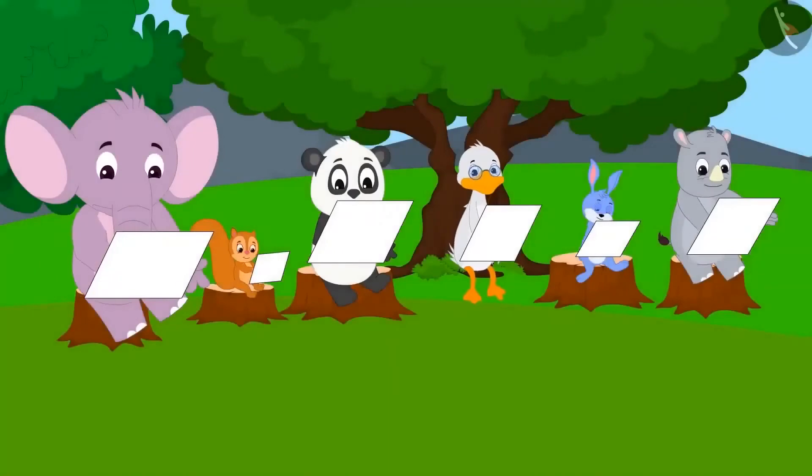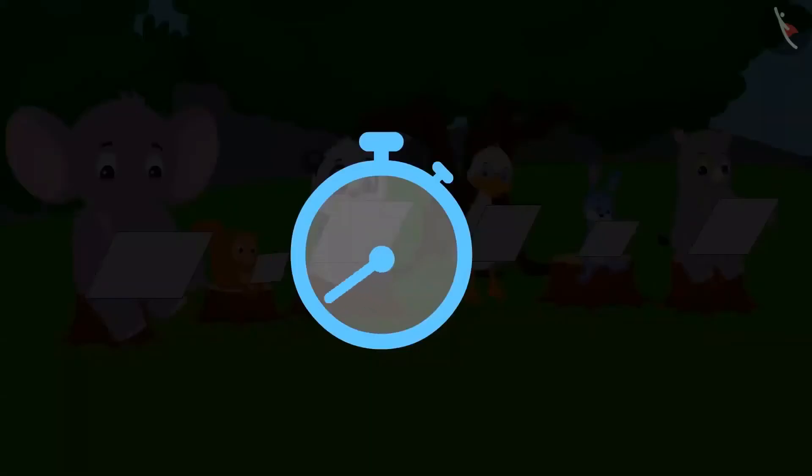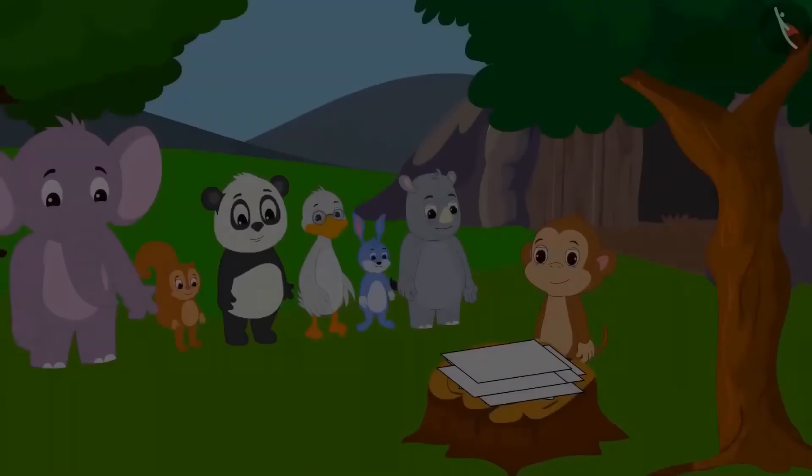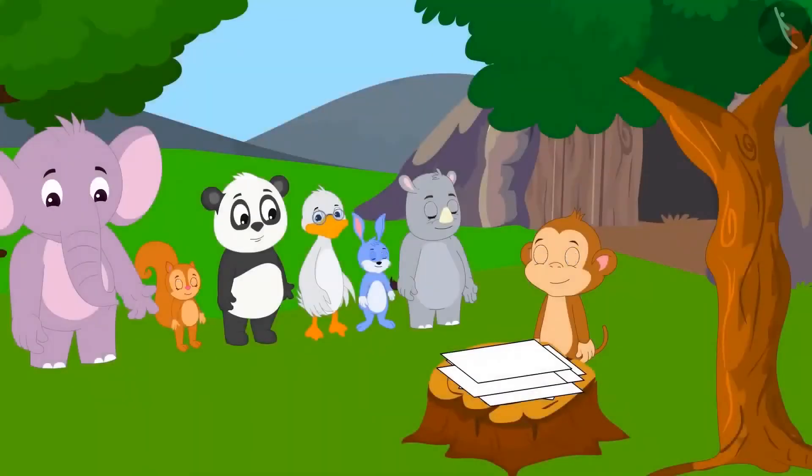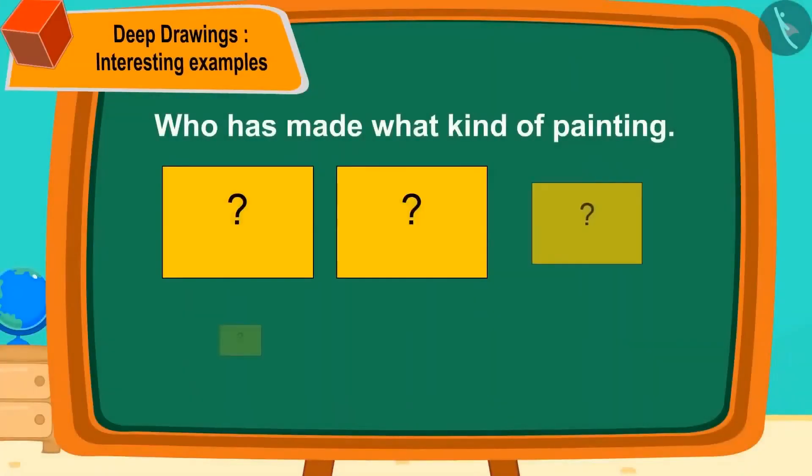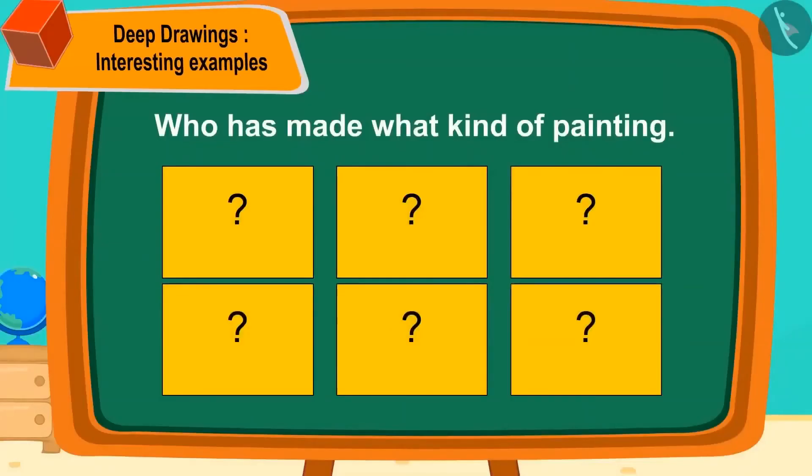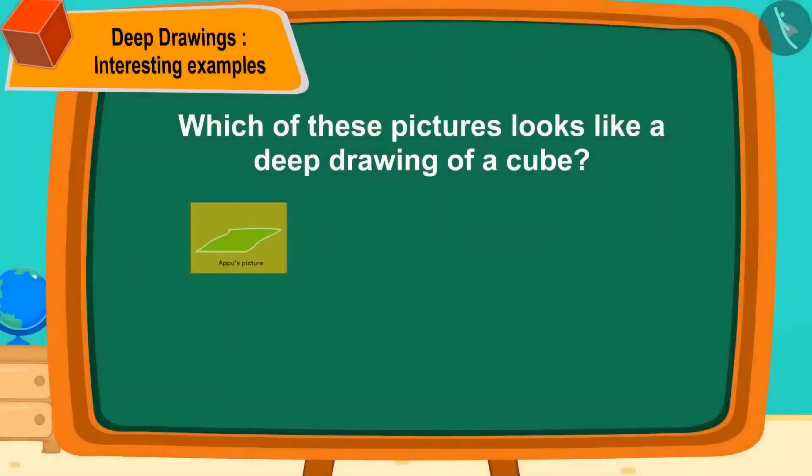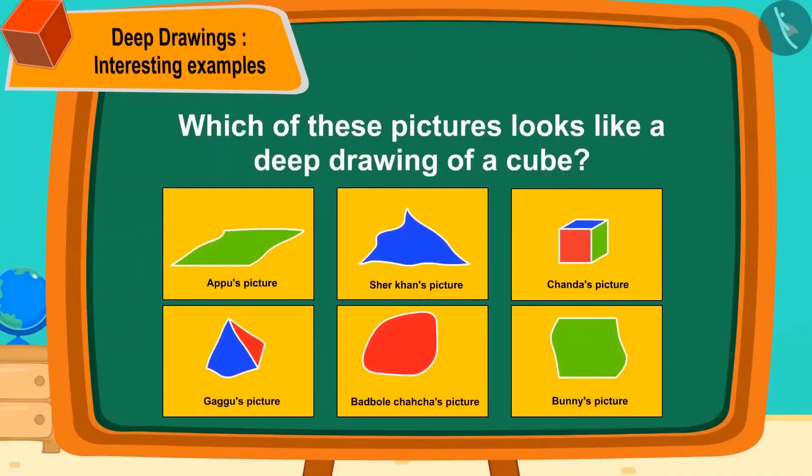Everyone started drawing their own pictures. Time ran out and everyone gave their pictures to Babban. Let's see who has made what kind of picture. Children, can you take a look at these pictures and tell us which of these pictures that you see in front of you looks like a deep drawing of a shape of a cube?